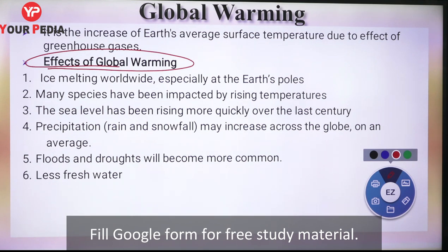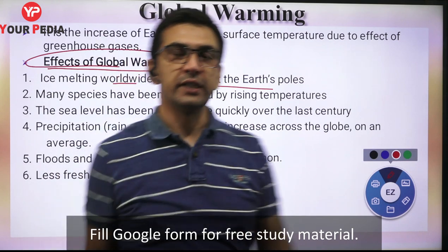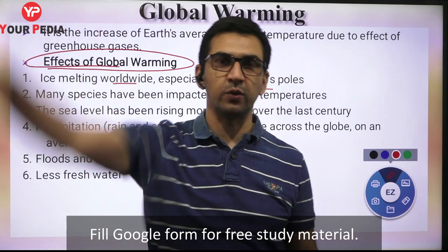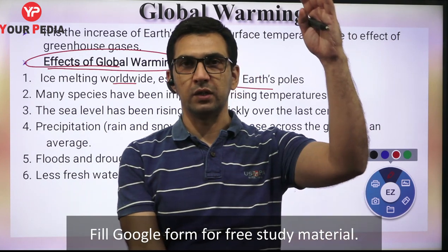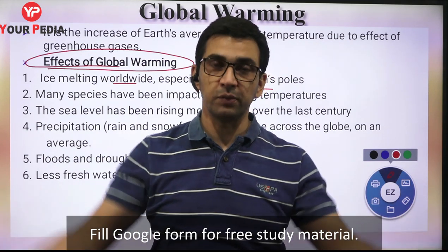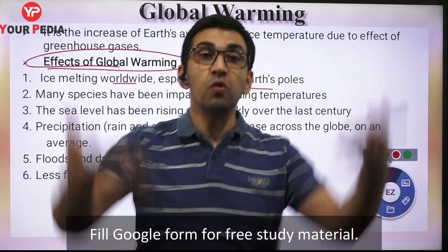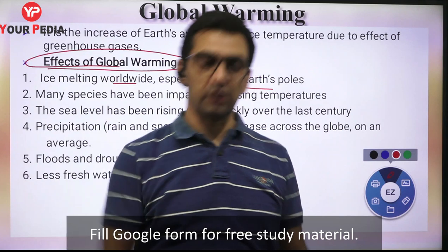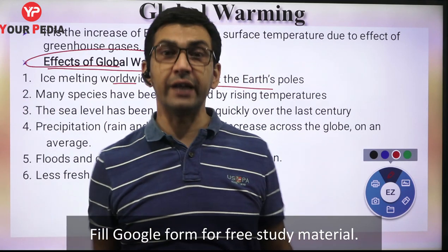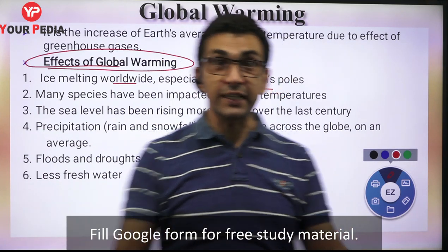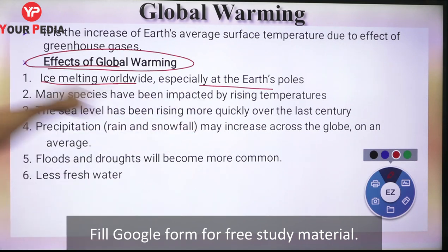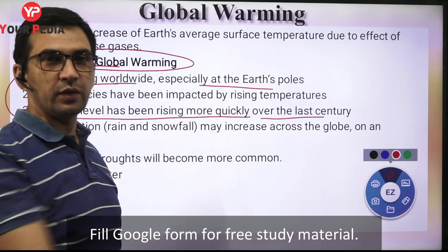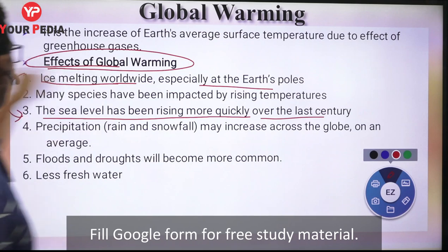Effects of global warming: first, ice melting worldwide, especially at the earth's poles. Antarctica is a full ice cap - if polar temperatures increase, polar ice melts. If it melts, the overall sea level will rise, causing coastal flooding. Low-lying coastal areas will be inundated, and island nations will face the danger of submersion. Sea level has already been rising more quickly over the last century - this has been observed.